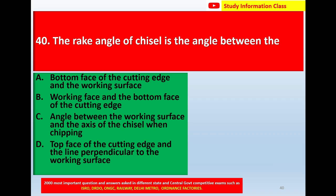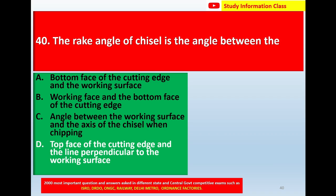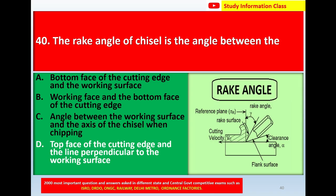Question 40: The rake angle of a chisel is the angle between — options: A) bottom face of the cutting edge and the working surface, B) working face and bottom face of the cutting edge, C) working surface and axis of the chisel when chipping, D) top face of the cutting edge and the line perpendicular to the working surface. The correct answer is option D. Thank you for watching. Jai Shri Rama.